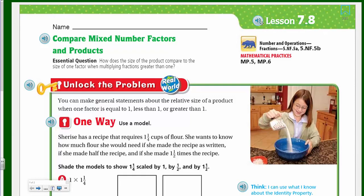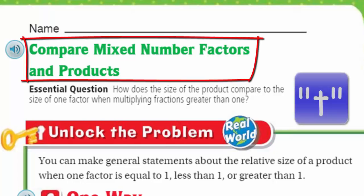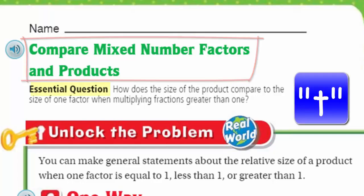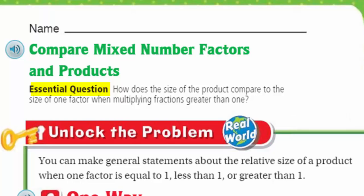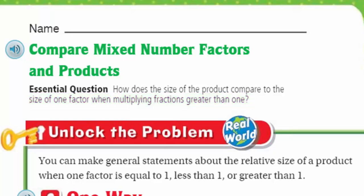What's our topic today, Mr. Laura? Our topic — we're going to compare mixed number factors and products. What does our essential question say? It says: how does the size of the product compare to the size of one factor when multiplying fractions greater than one? That's a mouthful. We're going to find out a lot about multiplying fractions greater than one, less than one.